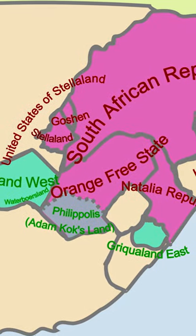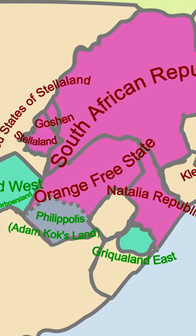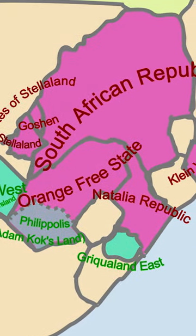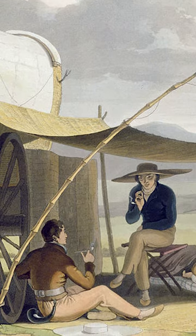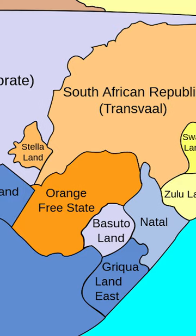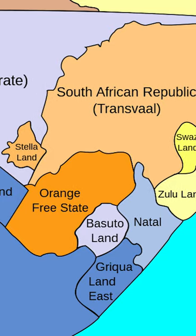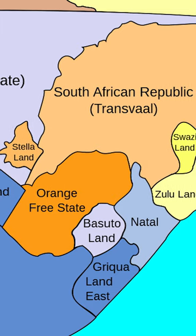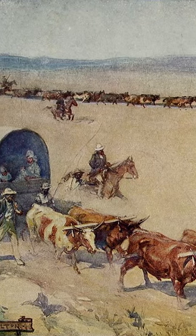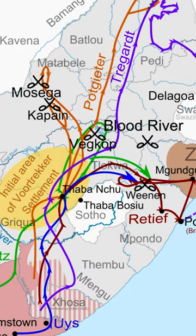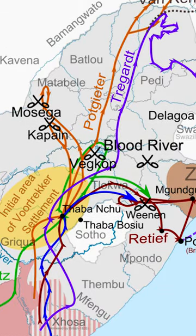The short-lived Boer Republics in South Africa were independent states established by Dutch descendant Boers during the 19th century. The most notable were the South African Republic, also known as the Transvaal, and the Orange Free State. These republics emerged as a result of Boer discontent with British colonial rule, resulting in the Great Trek, where the Boers migrated to the north.